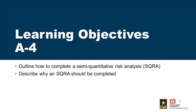For module 8.4, the learning objectives are: outline how to complete a semi-quantitative risk analysis — we use the acronym SQRA. Key concepts include reasonable selection of likelihood and consequence categories, understanding how to combine loading and response probabilities to guide category selection, understanding the importance of uncertainty in category selection, understanding the limitations of SQRA, and understanding what SQRA results can be used for.